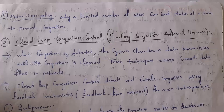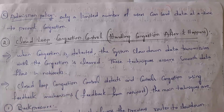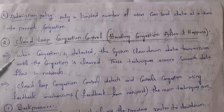The fifth one is admission policy, that is nothing but giving admission to only limited users. So only a limited number of users can send data at the same time in the network, which will prevent congestion. These are the various techniques used in open loop congestion control.